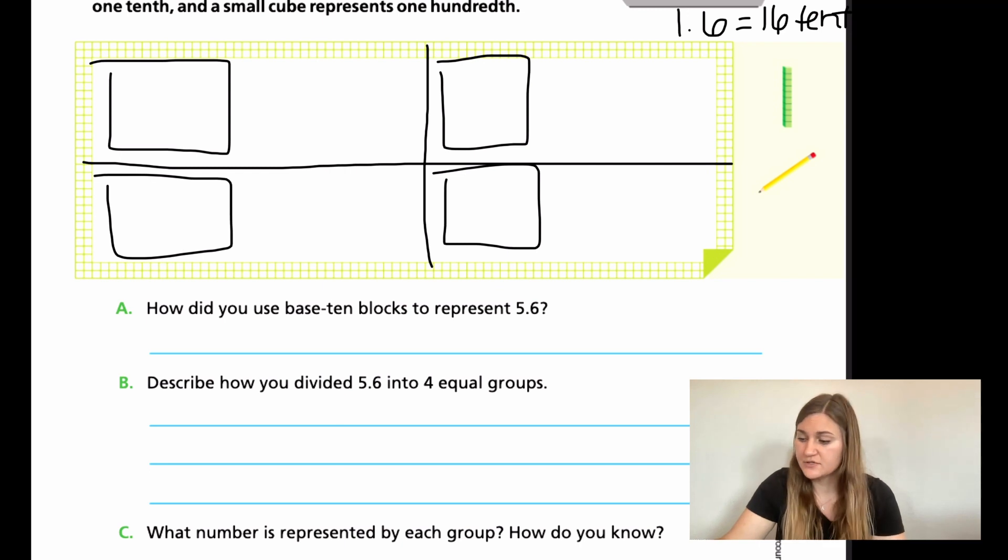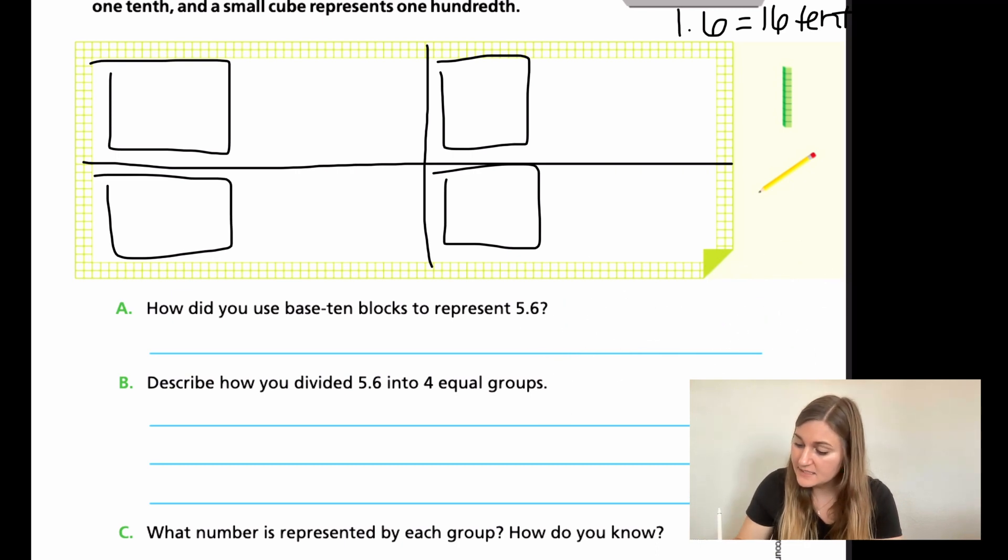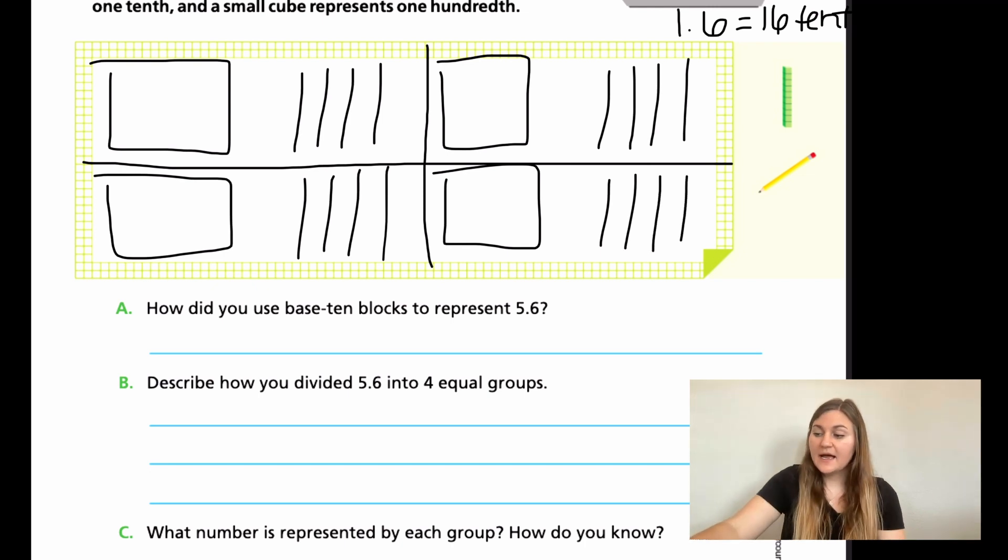And I'm actually going to draw that just to make sure that everyone is understanding what I'm saying. So if I had one flat here as my one whole and then I had six, one, two, three, four, five, six longs here. What I did was I just turned this flat into 10 longs. So now I have 10 here and I have six here. So I'm going to have 16 longs. Hopefully that makes sense. Normally I would have visual models to show you on the camera, but right now I'm just using drawings. So I have 16 longs that I want to divide up into four groups. So I know if I have 16 longs and I'm dividing it into four groups, I'm going to have four longs per group. So I'm going to give each group four longs. Now I have a total of 5.6 distributed evenly between all of the groups.